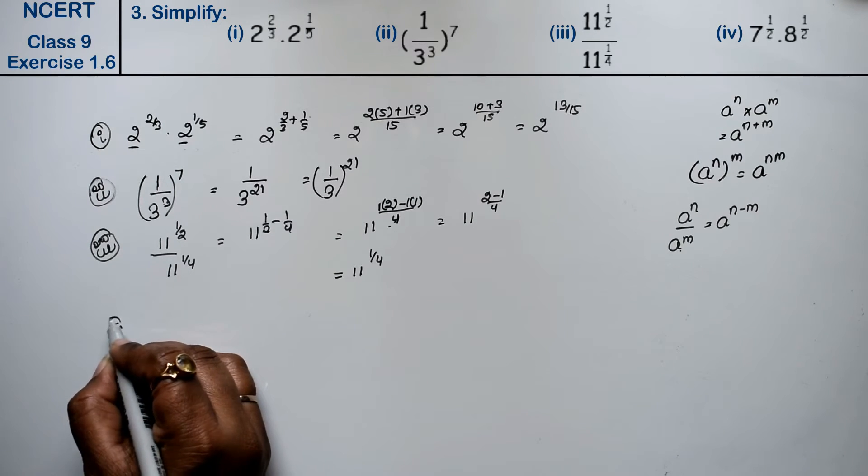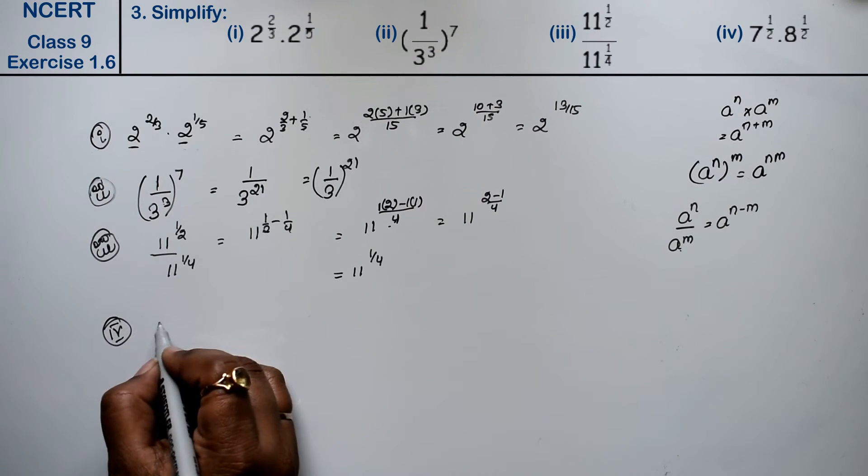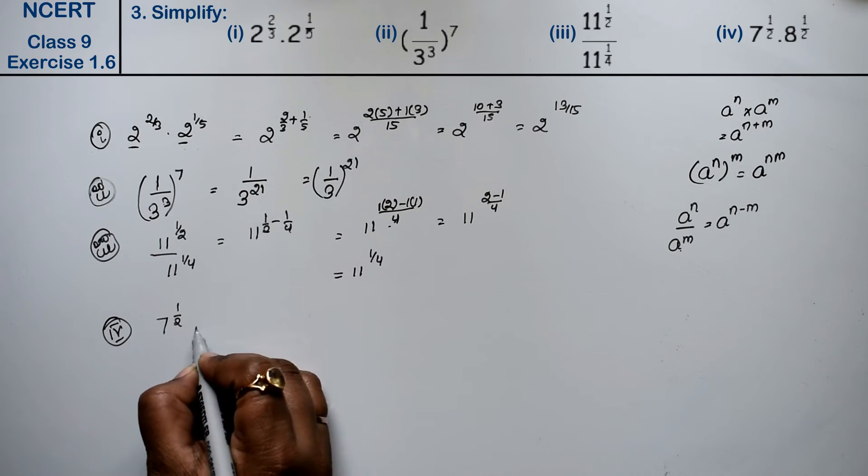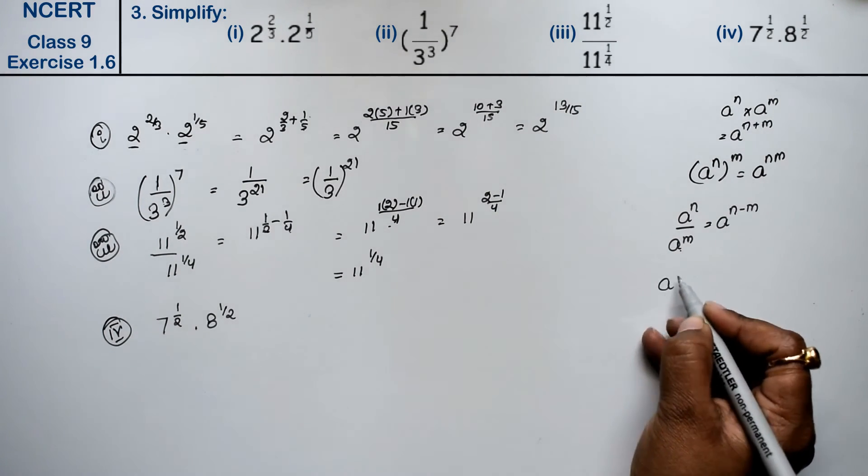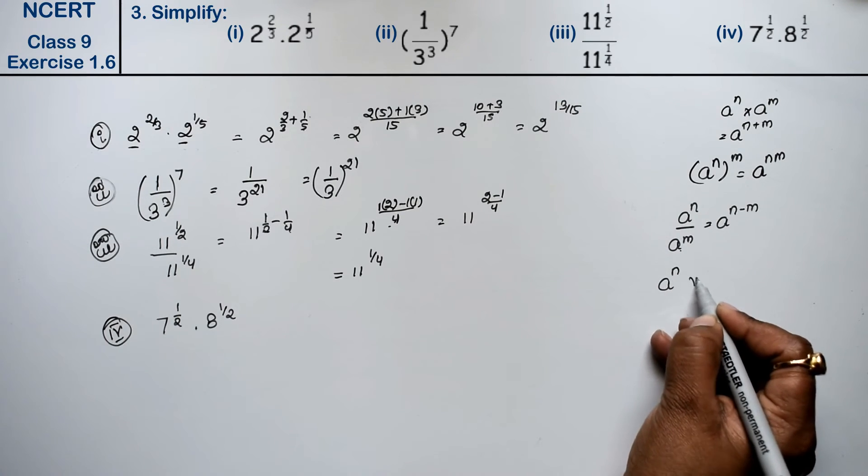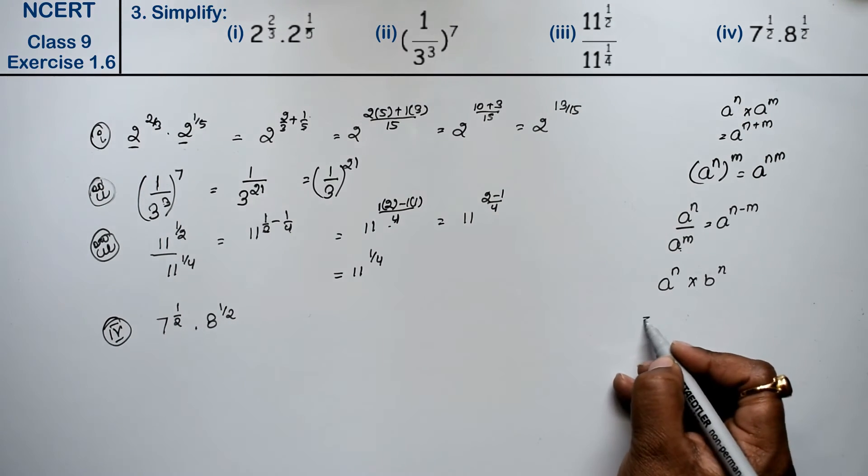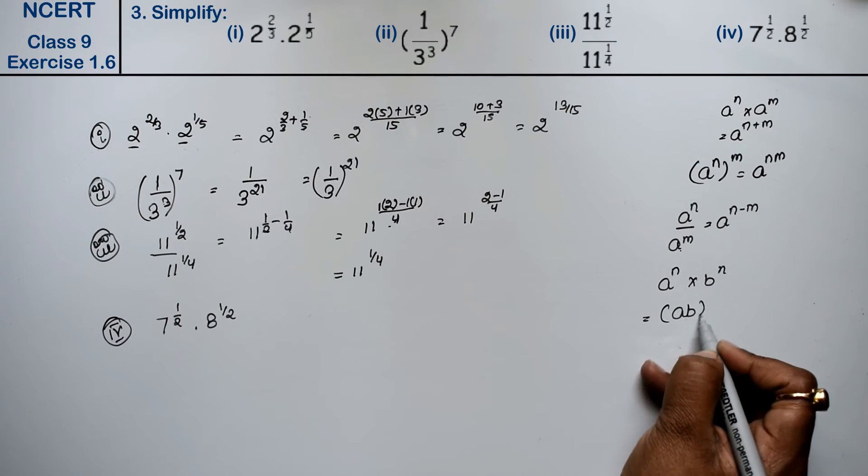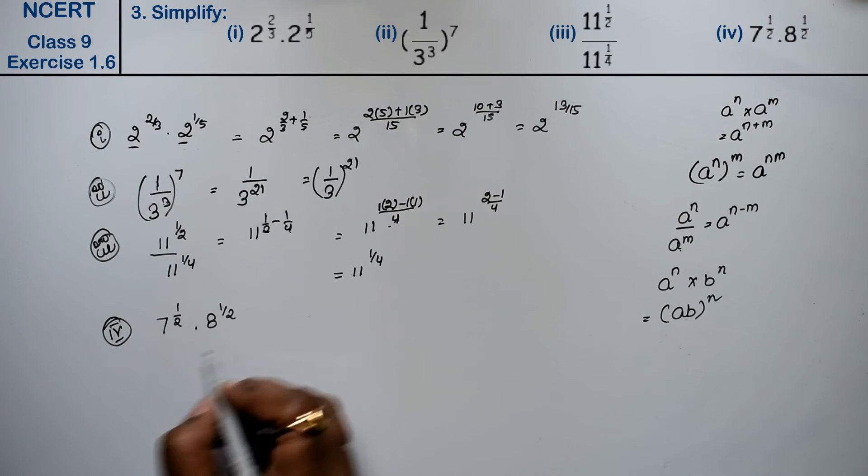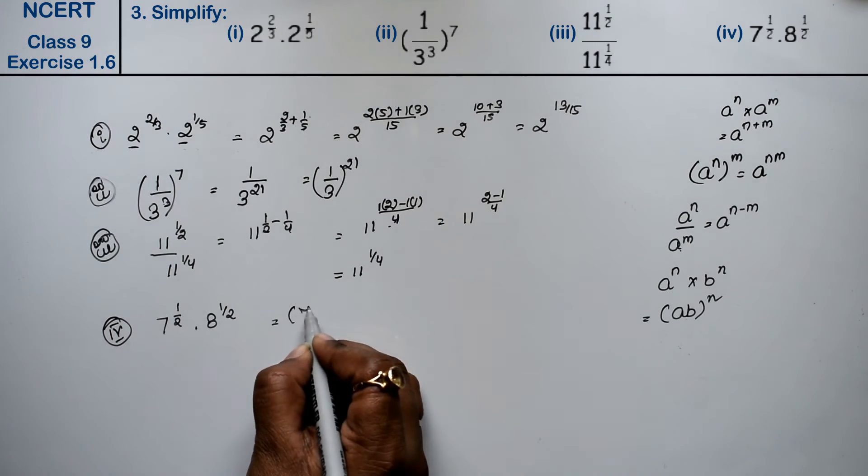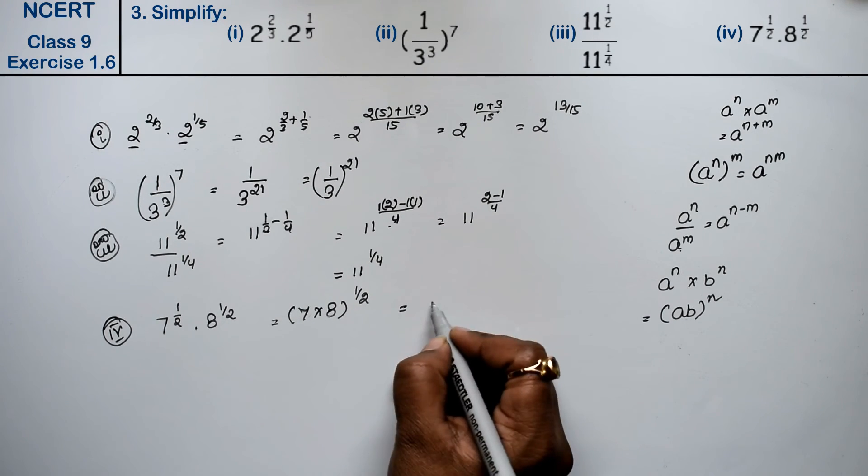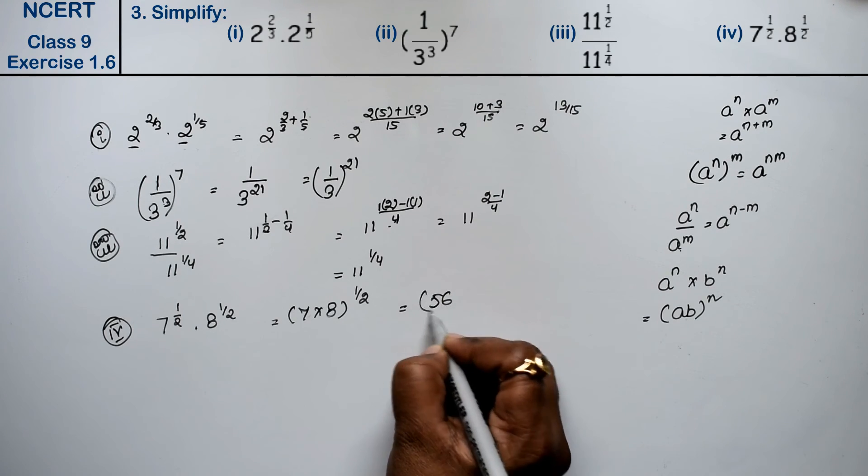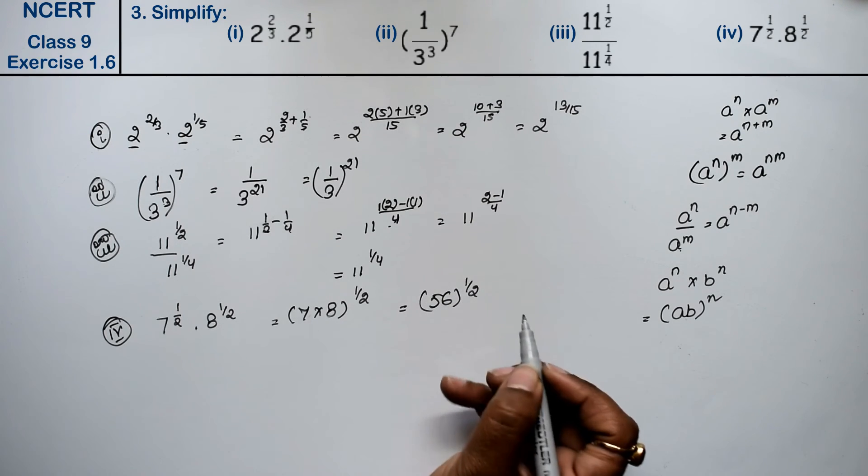Let's do 4th part. 4th part is 7 to the power 1 upon 2 into 8 to the power 1 upon 2. Friends, whenever it's like this, A to power n into B to power n, what do we do? AB to power n. So what do we get? 7 into 8 to power half. 7 eights are 56, to the power half is the answer.